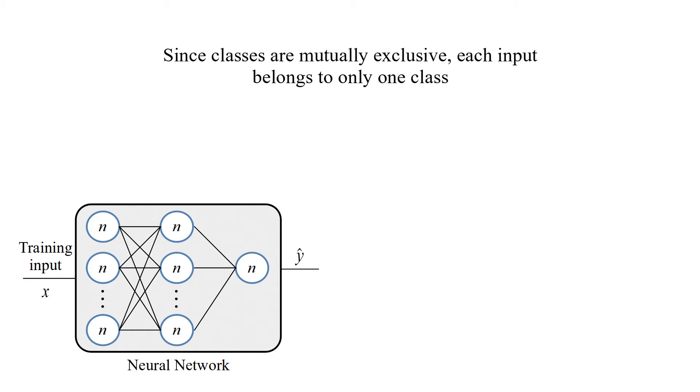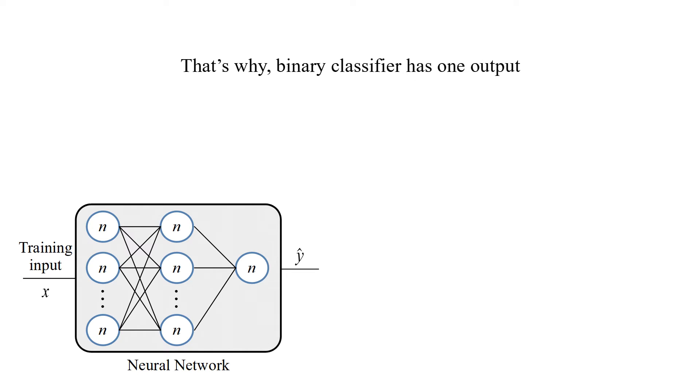Since classes are mutually exclusive, each input belongs to only one class. Binary classifier is expected to predict positive class probability for each input. That's why binary classifier has one output.